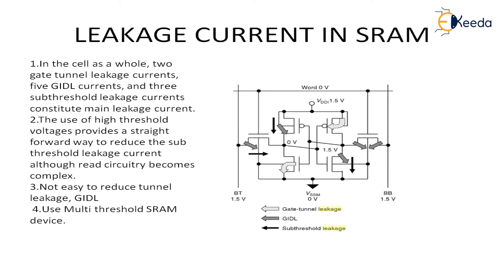In simple terms, the major component — the culprit — behind leakage is the sub-threshold leakage. It is not easy to reduce channel leakage and GIDL. The use of high threshold voltages is a straightforward way to reduce sub-threshold leakage current: when my threshold voltage is reducing, leakage current is increasing, so I can make the threshold voltage high. But when I use a high threshold voltage, the sub-threshold current reduces, yet the read operation becomes more complex. So I can't simply do that either.